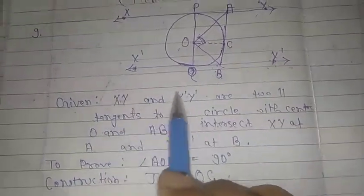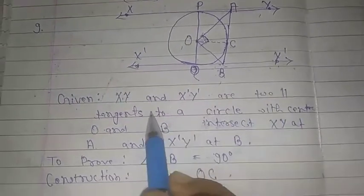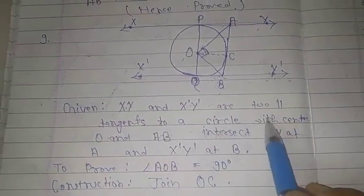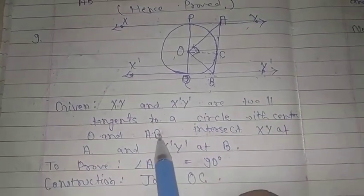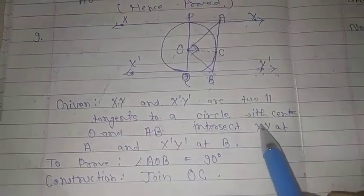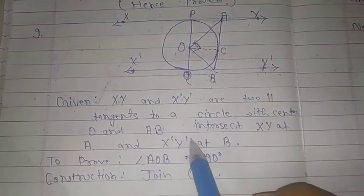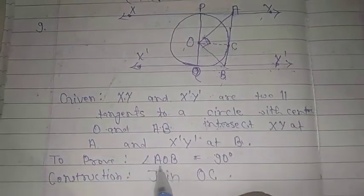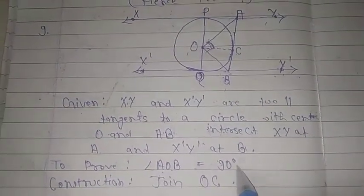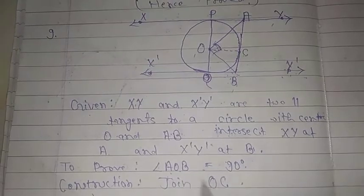Given: XY and X'Y' are two parallel tangents to a circle with center O, and AB intersects XY at A and X'Y' at B. To prove: angle AOB equal to 90 degrees.